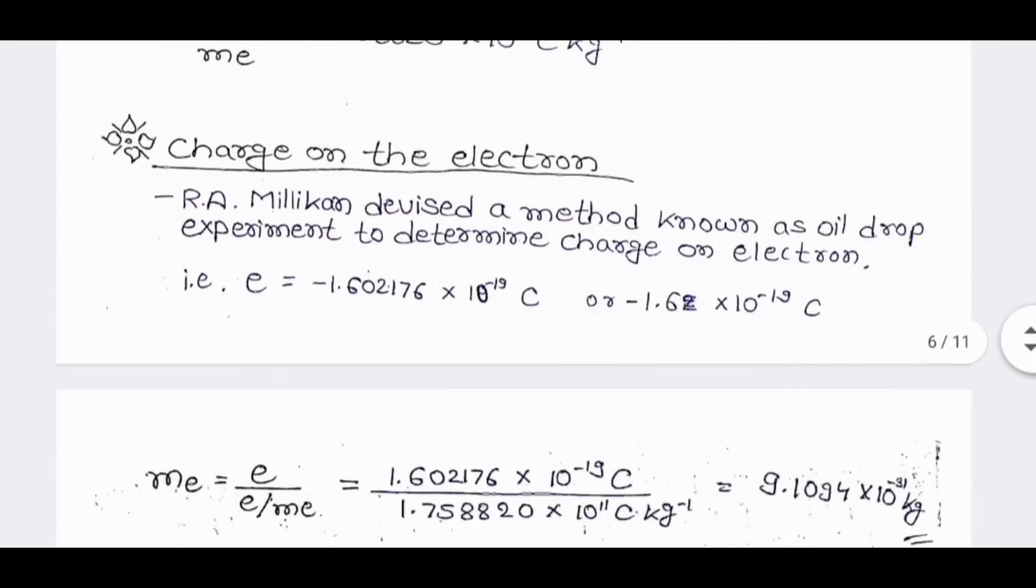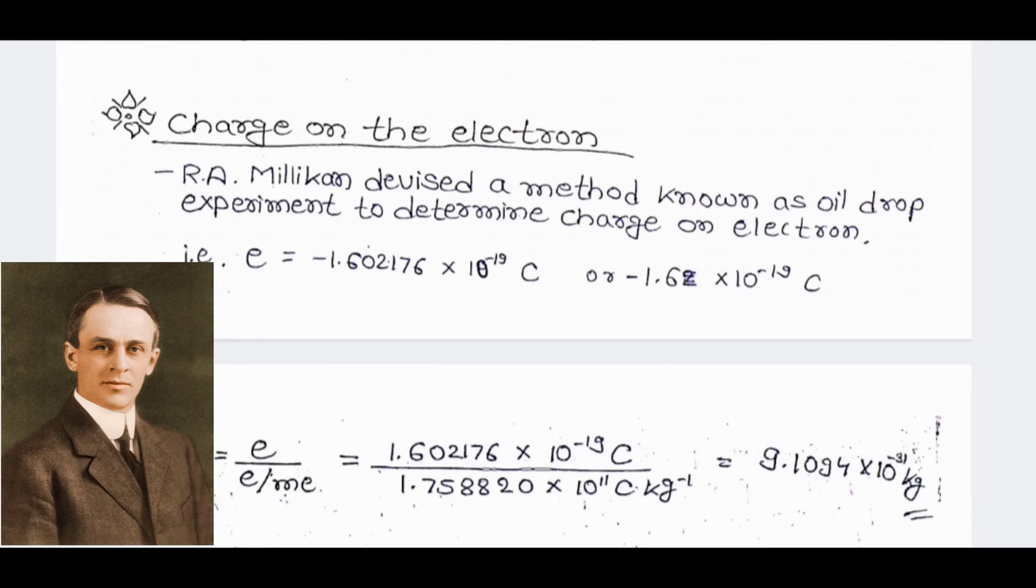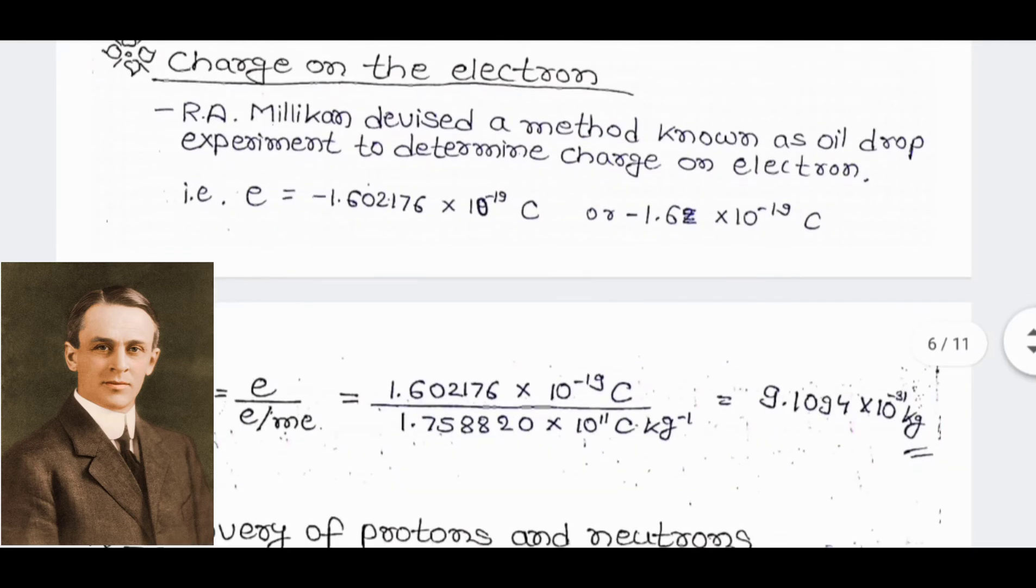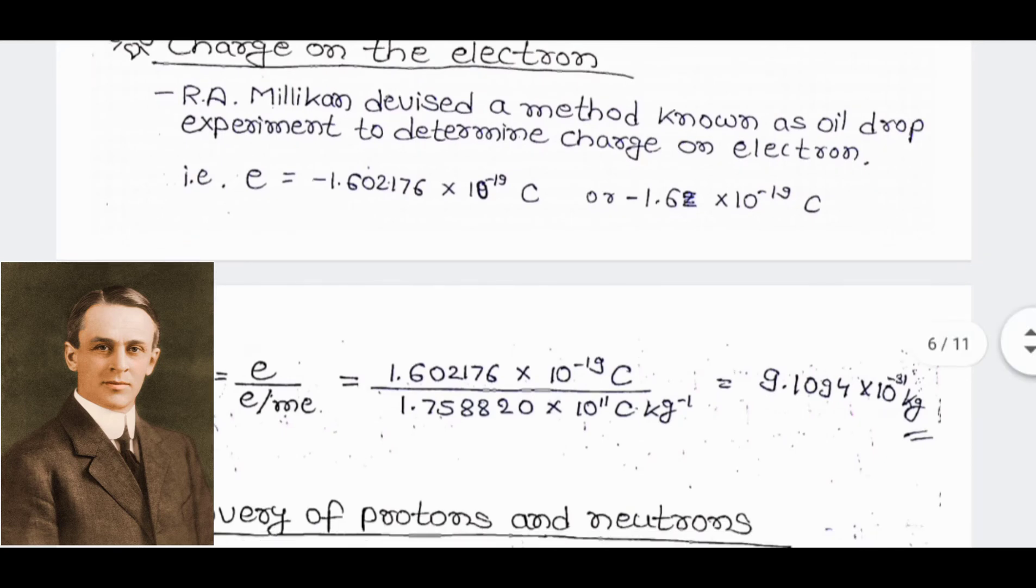Charge on electron: R.A. Millikan devised a method known as oil drop experiment to determine charge on electron. E represents the charge on electron and E is equal to minus 1.602176 into 10 to the power minus 19 coulomb or 1.6 into 10 to the power minus 19 coulomb.